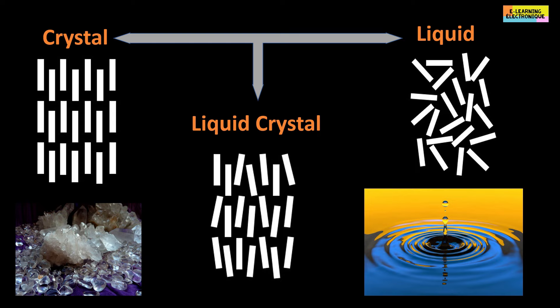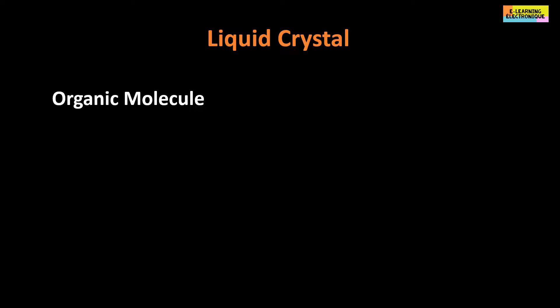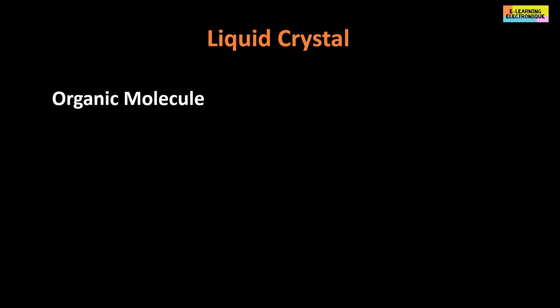In a liquid crystal, the molecules are in an intermediate state between the solid and the liquid state. The molecules do not have a positional order but keep an orientational order. Chemically, the liquid crystal is made of organic molecule, that is to say a molecule which contains carbon and hydrogen.